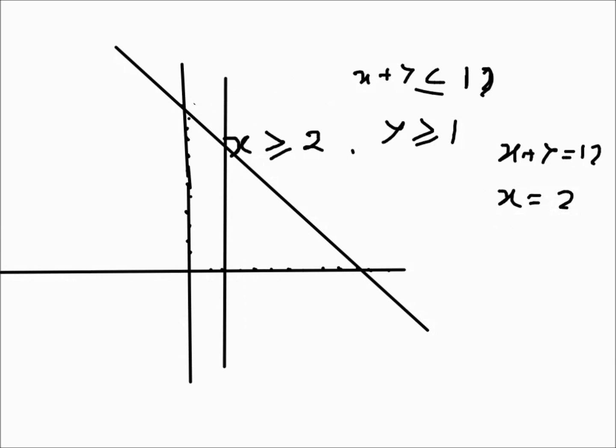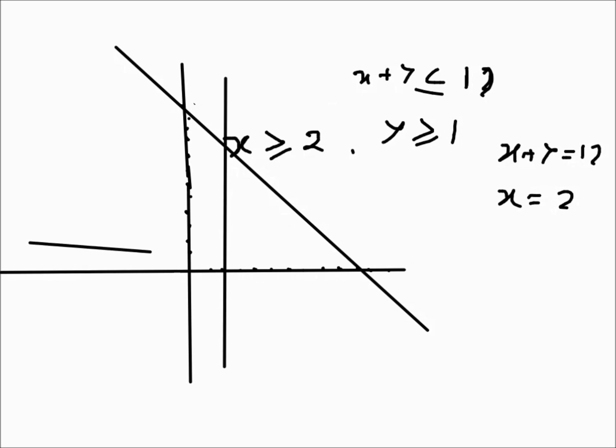And all of them will be solid because they are greater than equals to or less than equals to, so they will be solid, the line is inclusive. And the last one is y is 1, which is a horizontal line, so that will be something like that.